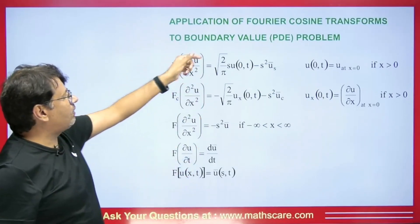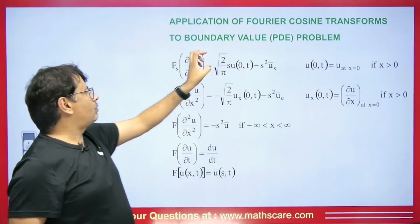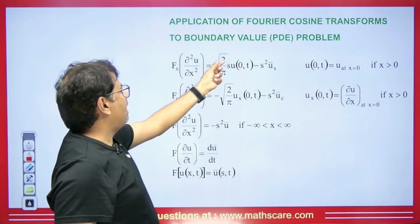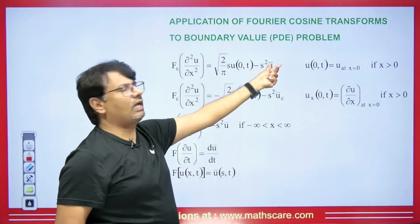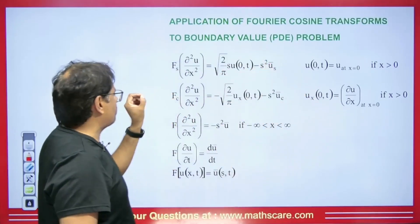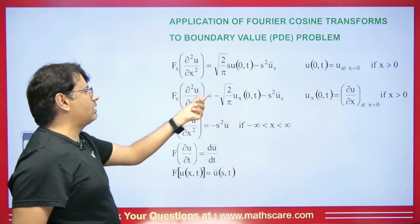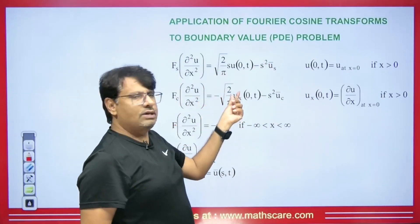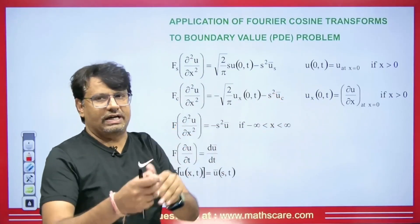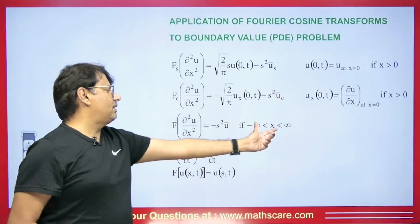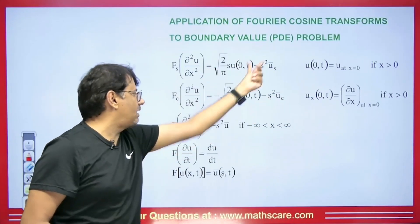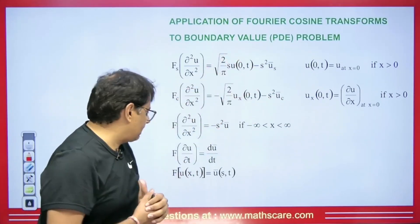For example, if we have del²u/dx² and u(0,t) is given, the Fourier sine transform gives: root(2/π)·s·u(0,t) minus s²·ū_s. If u_x(0,t) is given instead, we use the Fourier cosine transform: del²u/dx² equals minus root(2/π)·u_x(0,t) minus s²·ū_c, where ū_c denotes the Fourier cosine transform of u. If neither boundary term is given, only the s²·ū term remains.